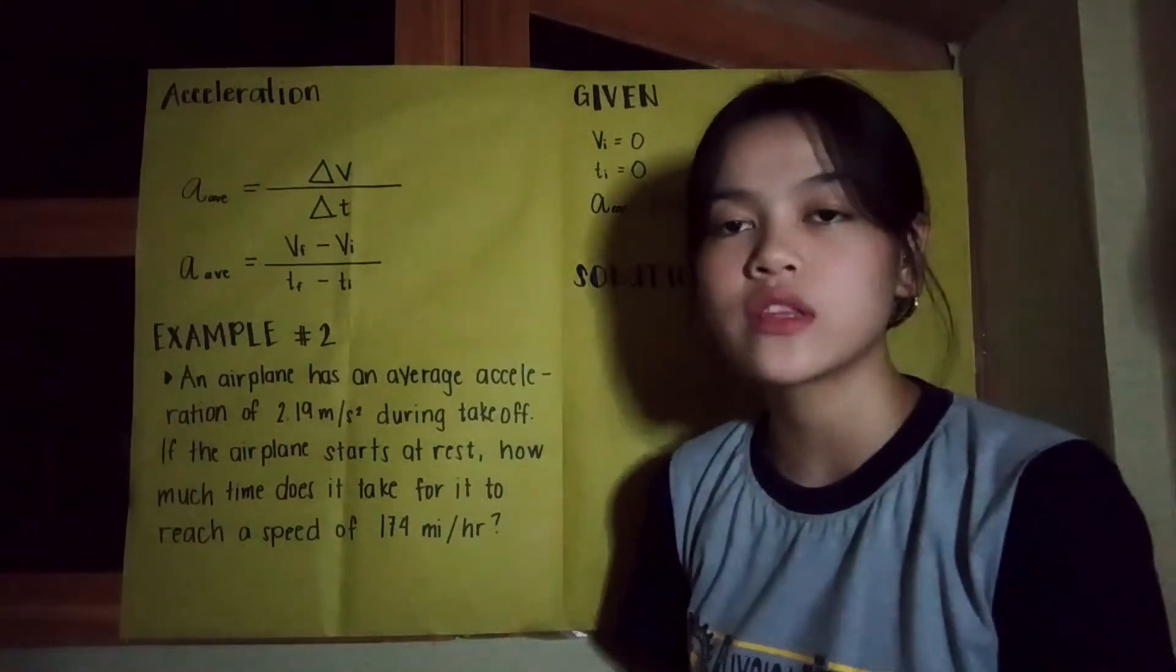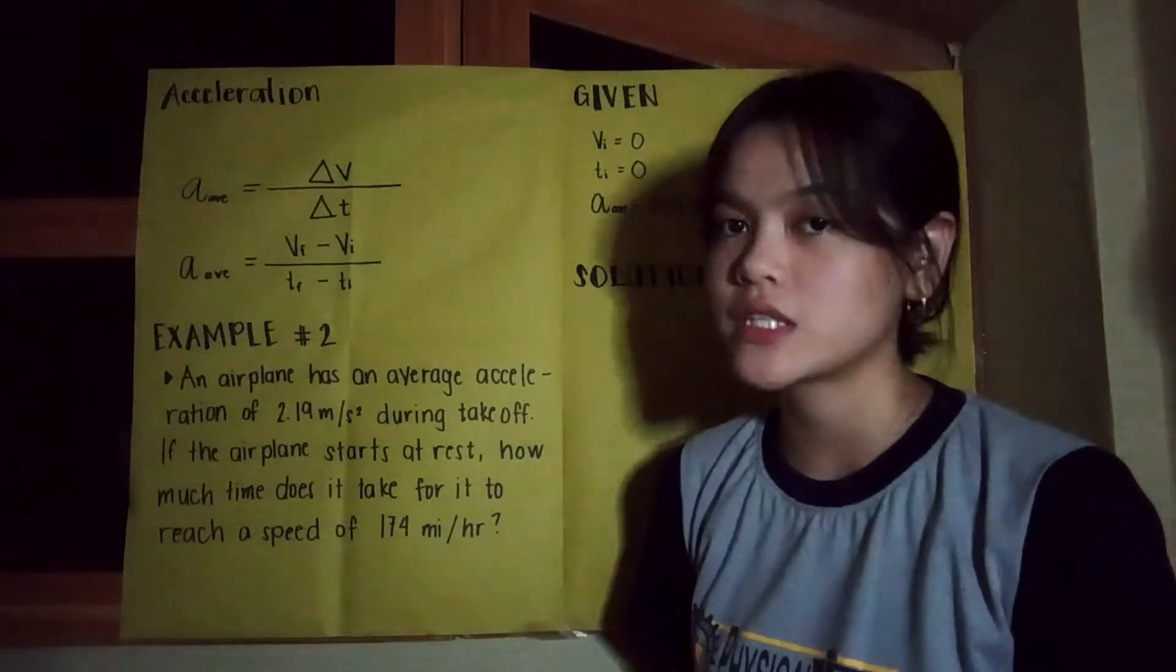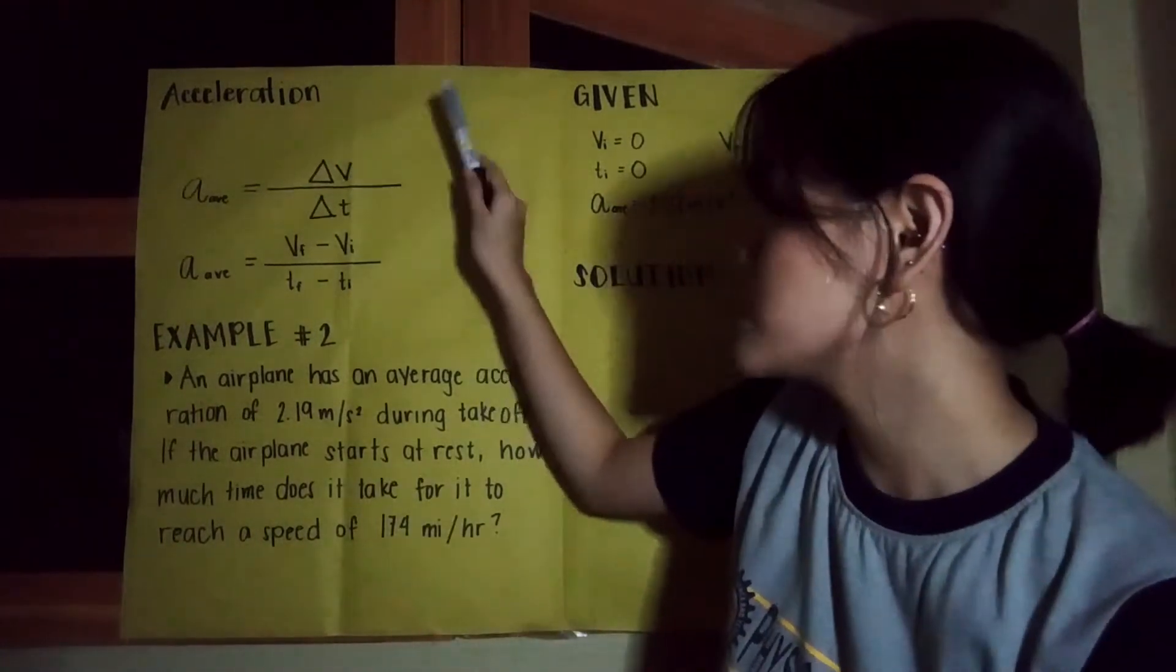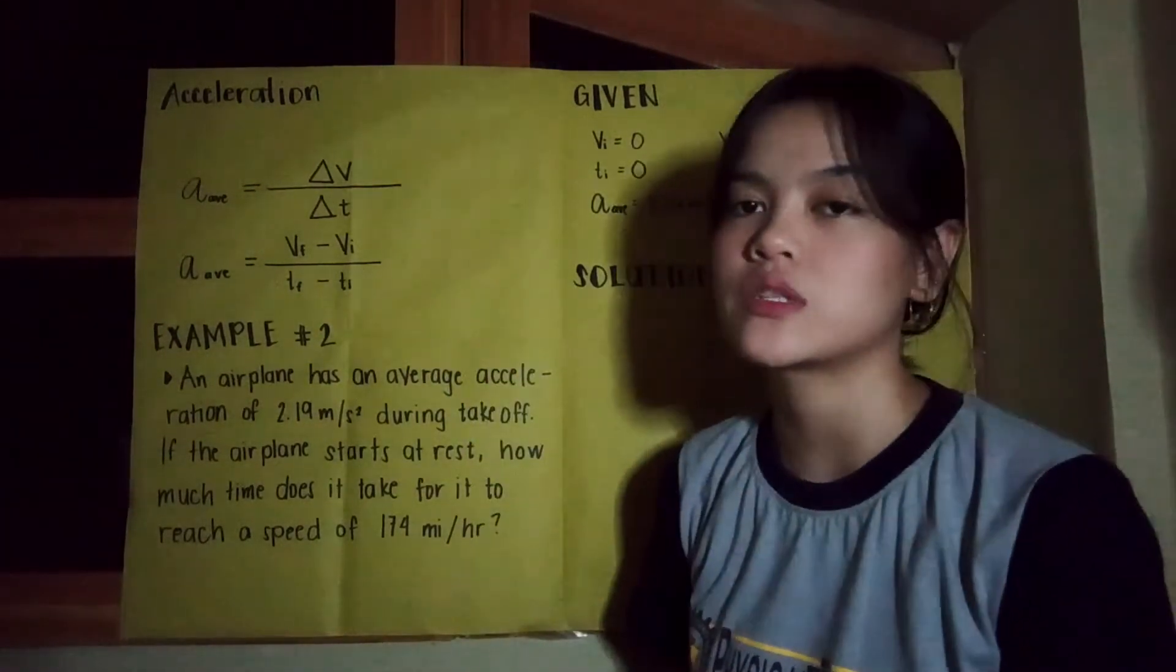Acceleration is also a one-dimensional vector and it is represented by the SI units meters per second squared. Because velocity is meter per second and time is second, what we have is meters per second squared.